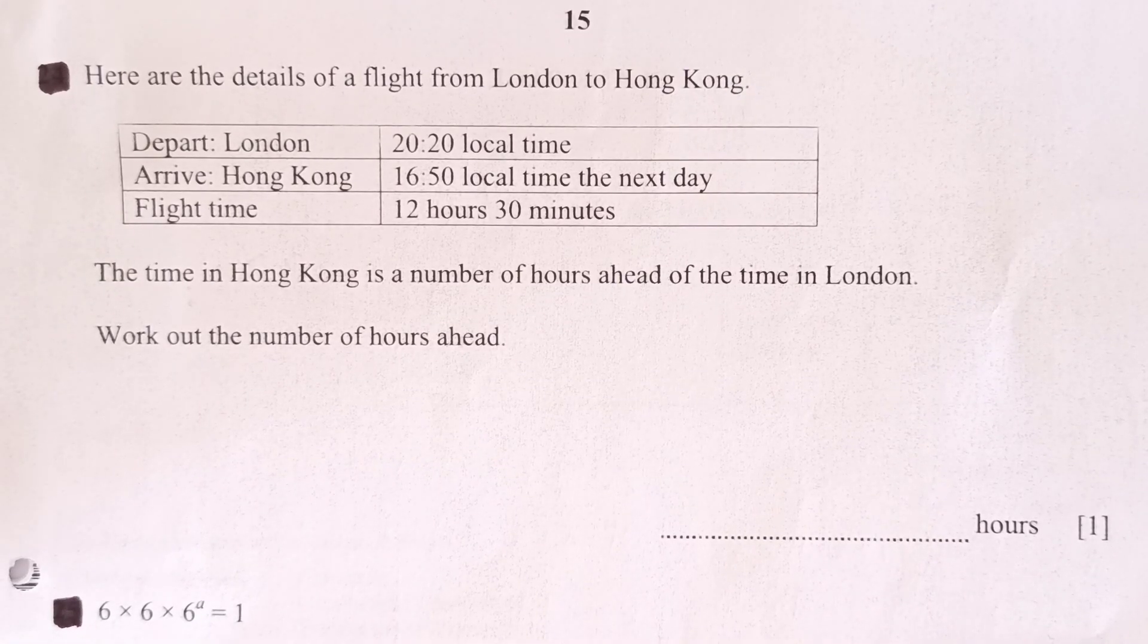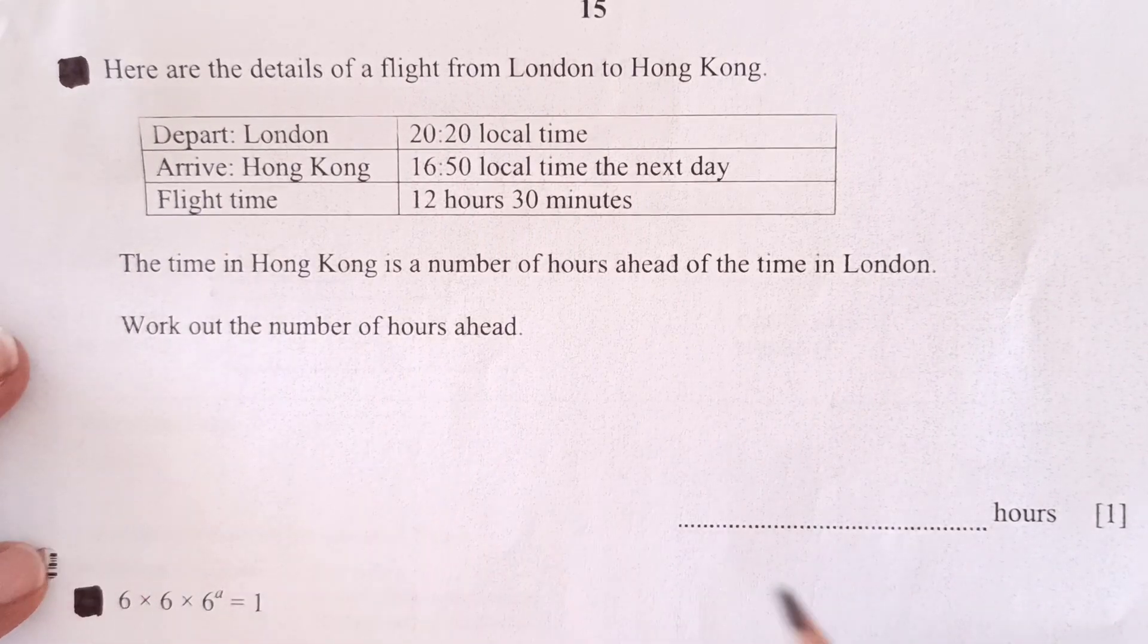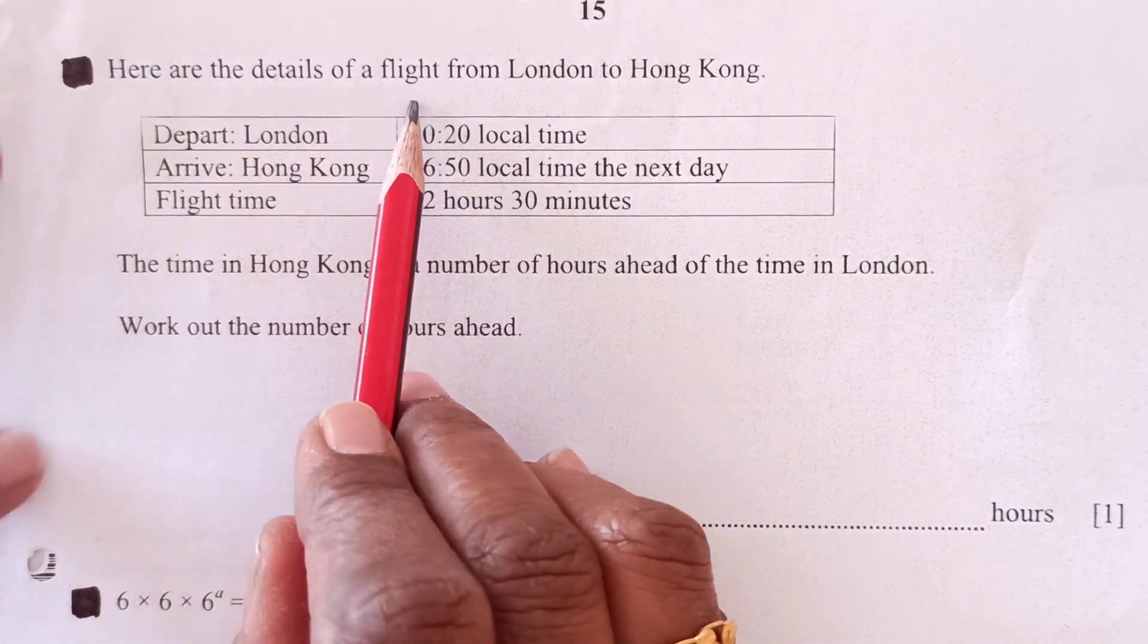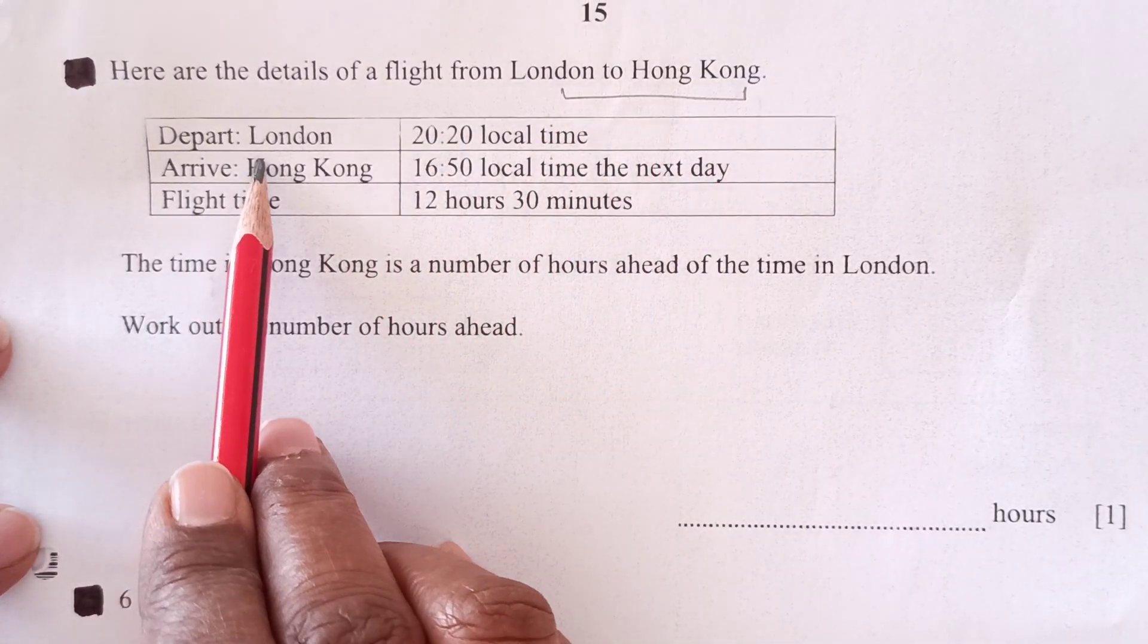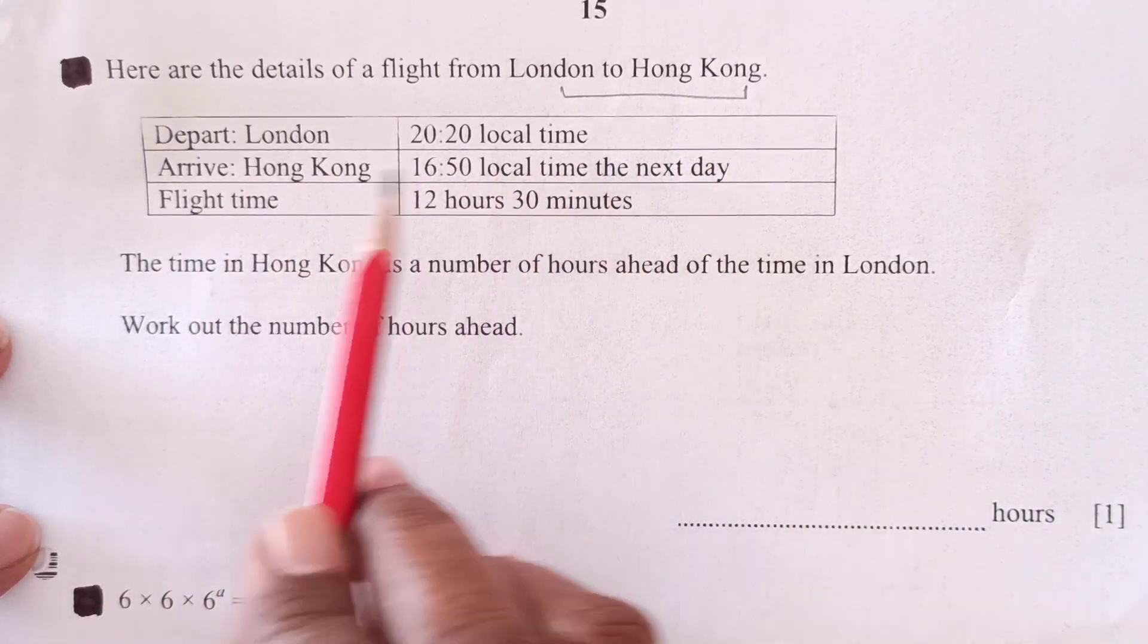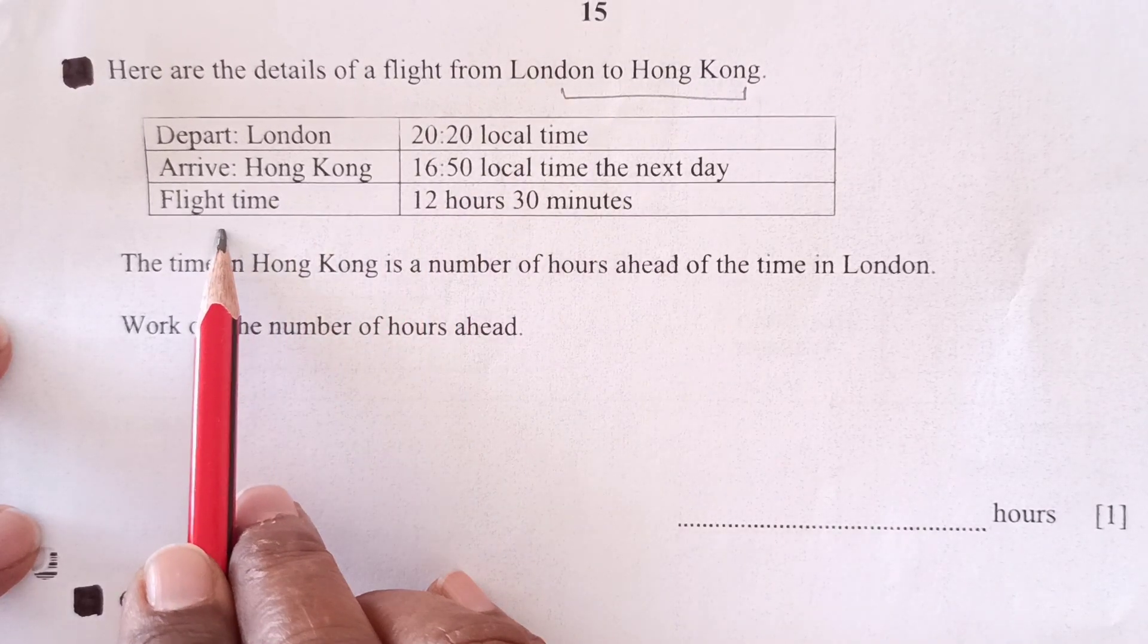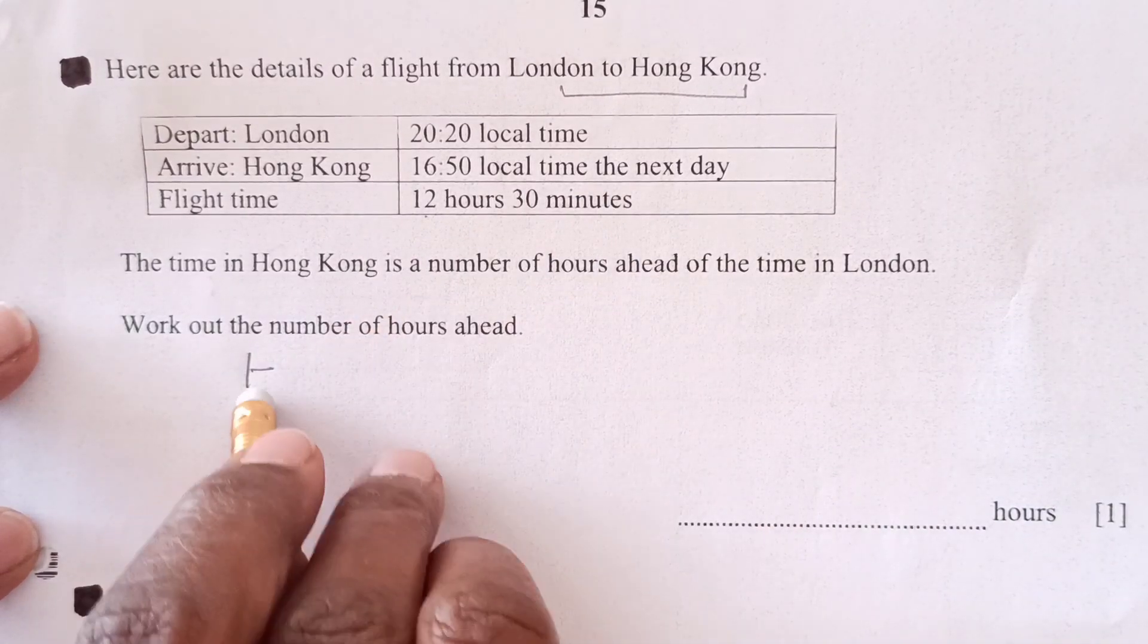Hello guys, welcome back to another video of last minute revision for checkpoint. I have this tricky question here. Here are the details of a flight from London to Hong Kong. Depart is London 20:20 local time, arrive time in Hong Kong is 16:50, flight time is 12 hours and 30 minutes.